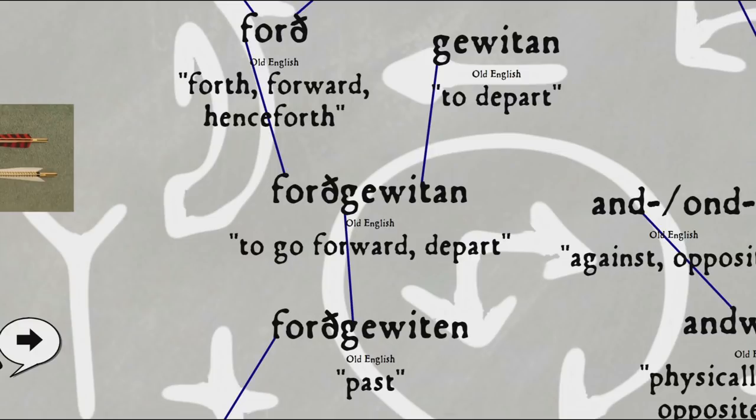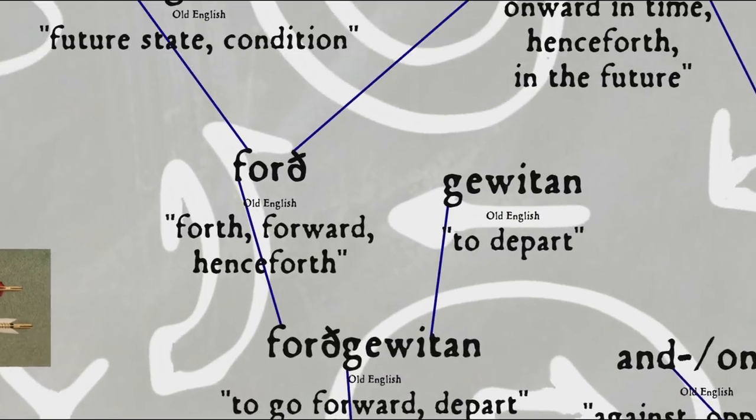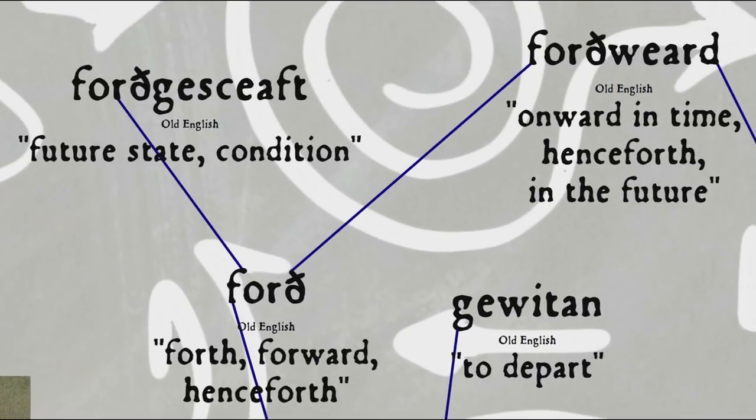So the directionality of forthewitten is perhaps the opposite of what we might expect for a word referring to the past, forth on its own can be used in temporal senses as well, referring in those cases to a future time, much like we would say henceforth in modern English, or in compounds such as forthwærd, literally forth turned, used to mean onward in time, henceforth or in the future, and forthyeshaf, literally forth creation, used to mean future state or condition.